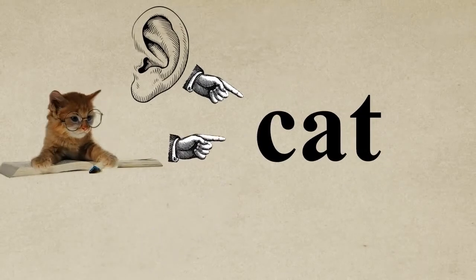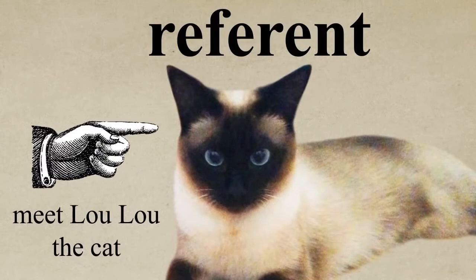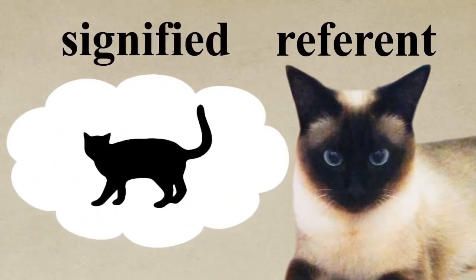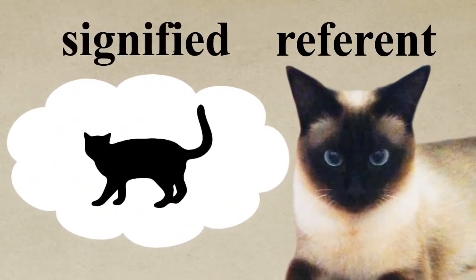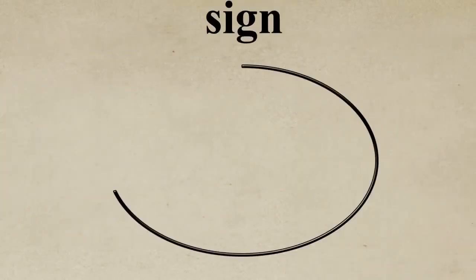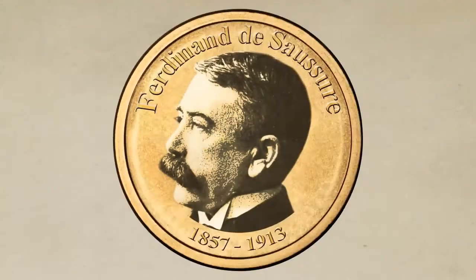The actual real thing in the world is called the referent. Note the difference between the thought of a cat and an actual real cat. The sign is a two-sided psychological entity, as one can't exist without the other — it just couldn't be a sign. Imagine a coin of just one side. You can't, right?